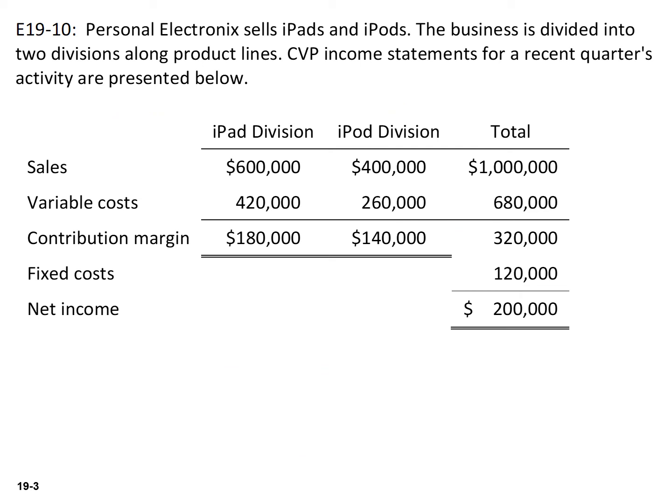The next thing we need to calculate is the company's breakeven point in dollars. We're going to take our fixed cost of $120,000 and divide that by the weighted average contribution margin ratio of 32% to arrive at our breakeven point in dollars of $375,000.